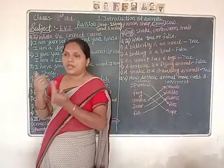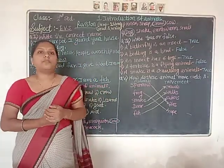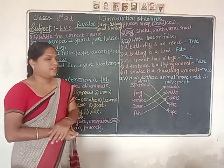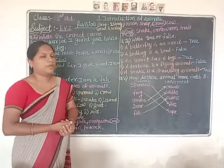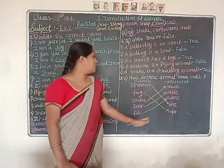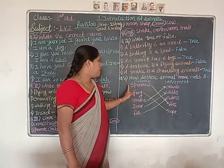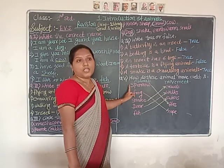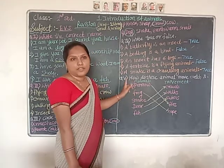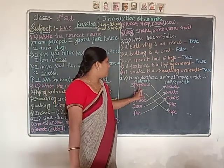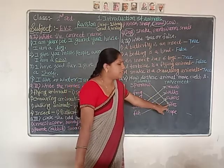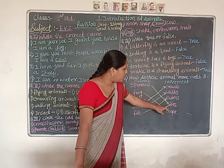Crawling animals crawl on the ground. Examples: sparrow is a bird — birds fly in the sky. So sparrow flies. Next — frog. Frog is a water animal but it also comes on land sometimes. How does a frog move? By hopping — frog always moves by hopping.